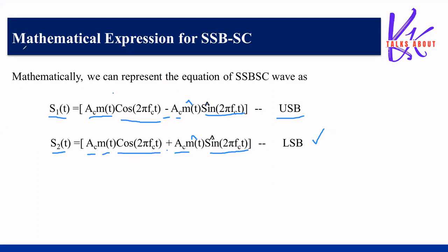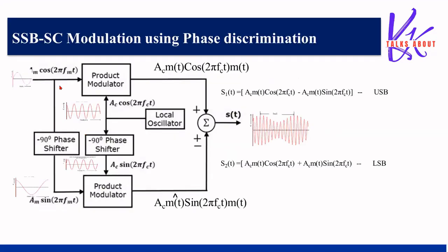The phase discrimination method uses two product modulators. The input message signal Am·cos(2πfmt) and the carrier signal are given to product modulator one. The message signal is also phase-shifted by 90 degrees using the Hilbert transform — giving m̂(t) = Am·sin(2πfmt) — which is fed to product modulator two. The carrier is similarly phase-shifted by 90 degrees, giving Ac·sin(2πfct) as input to the second product modulator.